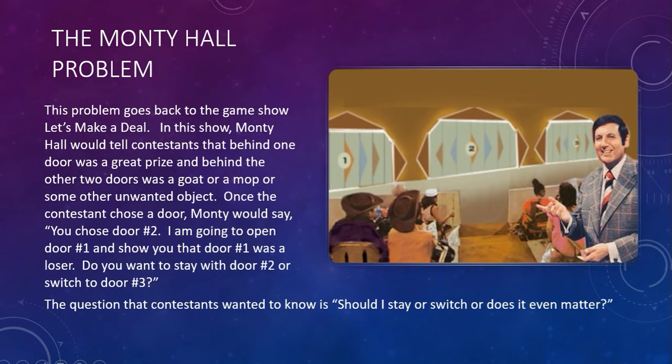Problem number two: the Monty Hall problem. You may have heard of this before because it is so famous. This problem goes back to the game show Let's Make a Deal — they still have a newer version. The original game show host was Monty Hall. He would give the contestants three doors and say, 'pick a door.' Behind one door is a car, and behind the other two doors are goats — something you don't want.